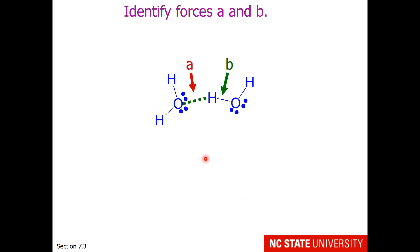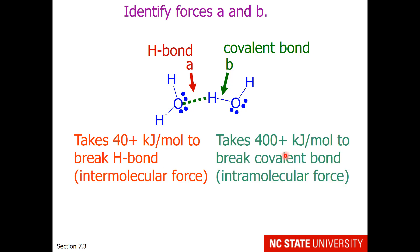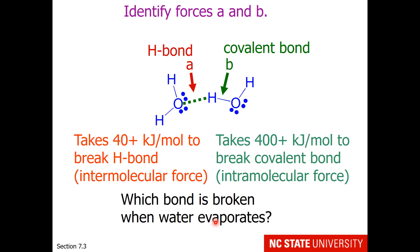Just a check to make sure students recognize the difference between intramolecular forces and intermolecular forces. A is an intermolecular force, called a hydrogen bond in this case. B is an intramolecular force, known as a covalent bond. It takes about 40 kJ per mole to break a hydrogen bond, and 400 kJ per mole to break a covalent bond. So which bond is broken when water evaporates? Obviously the one with lower bond strength. When water evaporates, hydrogen bonding interactions are broken.